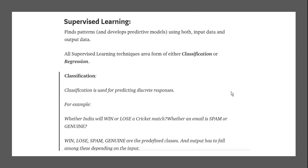Supervised learning is all about classification. Classification is used for predicting the response. For example, whether India will win or lose a cricket match, or whether an email is spam or genuine — spam and genuine are the different classes. Based on the input, the output will fall into one of the depending classes. These all come under classification or regression, which is one part of supervised learning.